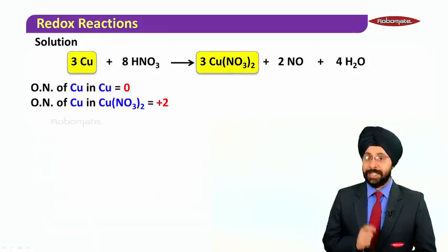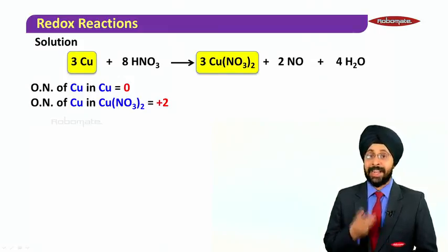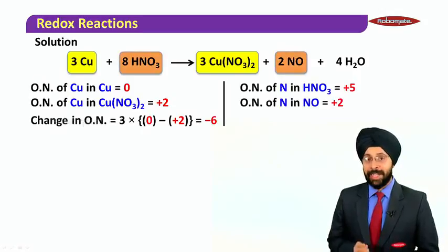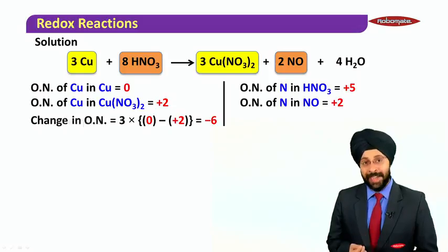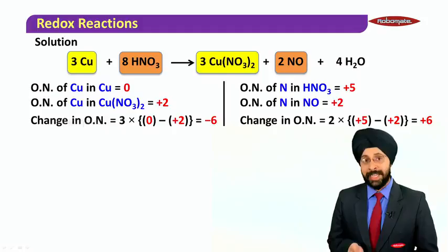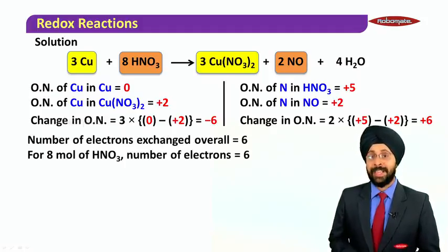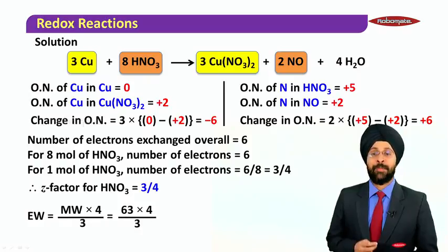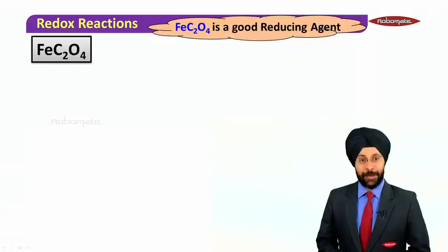The oxidation number of Cu in copper metal is zero and in copper nitrate is plus 2. Since there are three copper atoms involved, the change in oxidation number is 6 (loss). For NO, nitrogen in HNO3 is plus 5 and in NO is plus 2; with 2 moles of NO the change is also 6 (gain). So the overall electrons exchanged is 6. For 8 moles of HNO3 the electrons exchanged equal 6, so for 1 mole it is 6/8 = 3/4. Equivalent weight = molecular weight divided by (3/4) = 63 × 4/3.